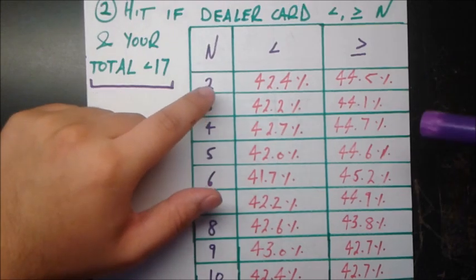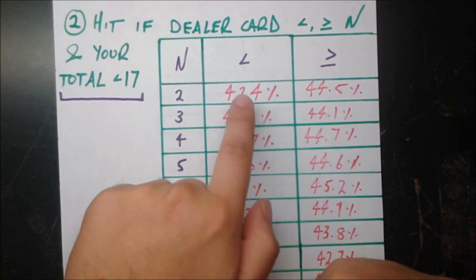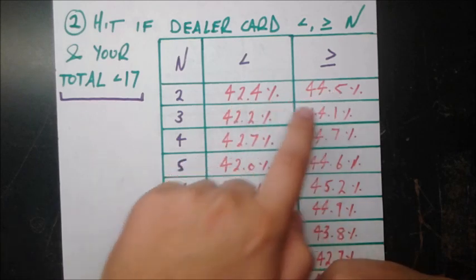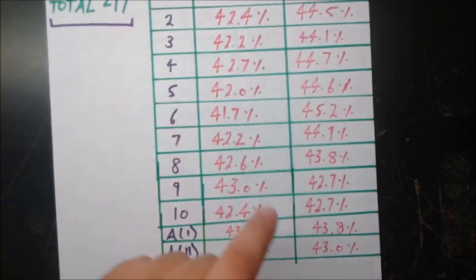So we see a very general trend, which is for most numbers, we see that the greater than or equal to probability is greater than the less than probability. So we see that this 44.5 is greater than 42.4, 44.1 is greater than 42.2. But it's not always true.